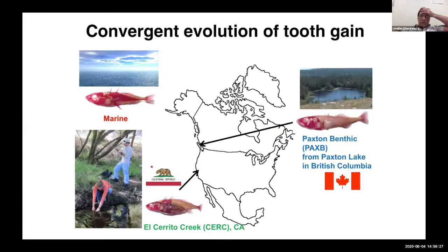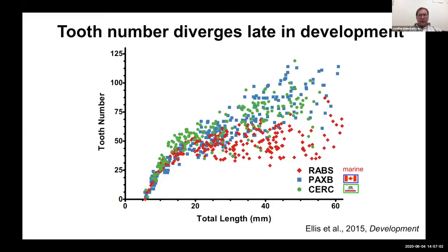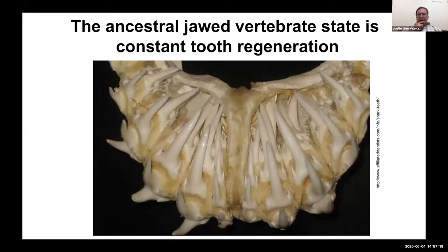We wondered whether this was specific to one freshwater population. We collected fish from a nearby creek near the Berkeley campus in El Cerrito, and Nick Ellis found that this California freshwater population has the same phenotype — increased tooth number. These two freshwater populations are independently derived and both evolved the same phenotype. Similar to the Canadian population, the Californian population also diverges late: early in development there's no difference in tooth number, but as animals approach half adult size, tooth number diverges. This made us think about what happens during mid-juvenile life and why tooth number diverges late, not early — which led us to think about tooth replacement and regeneration.